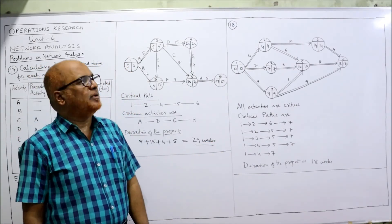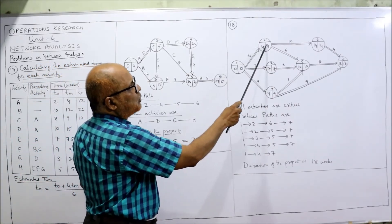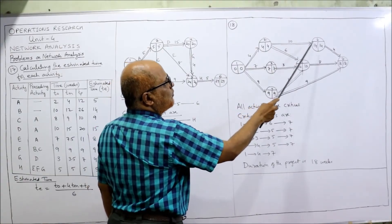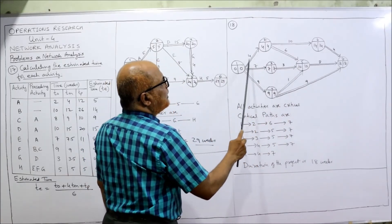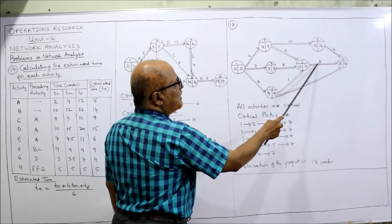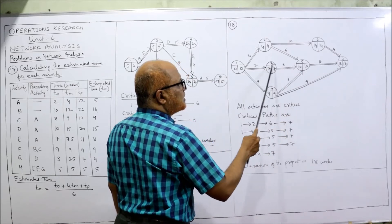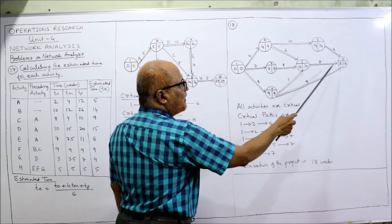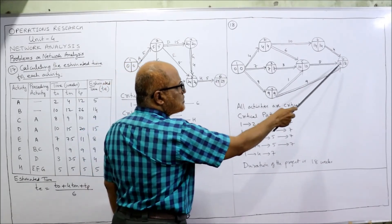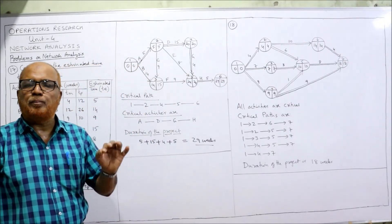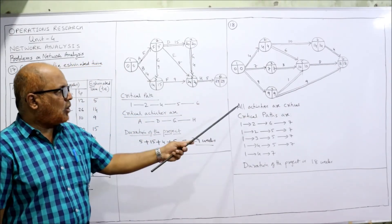The peculiar point in this problem is that all EST and LFT values are equal at every node, meaning all paths are critical. Going 1→2→6→7: 4 + 10 + 4 = 18. Going 1→2→5→7: 4 + 6 + 8 = 18. Going 1→3→5→7: 7 + 3 + 8 = 18. Going 1→4→5→7: 9 + 1 + 8 = 18. Going 1→4→7: 9 + 9 = 18. All paths sum to 18 — this is the first problem where all paths are critical.